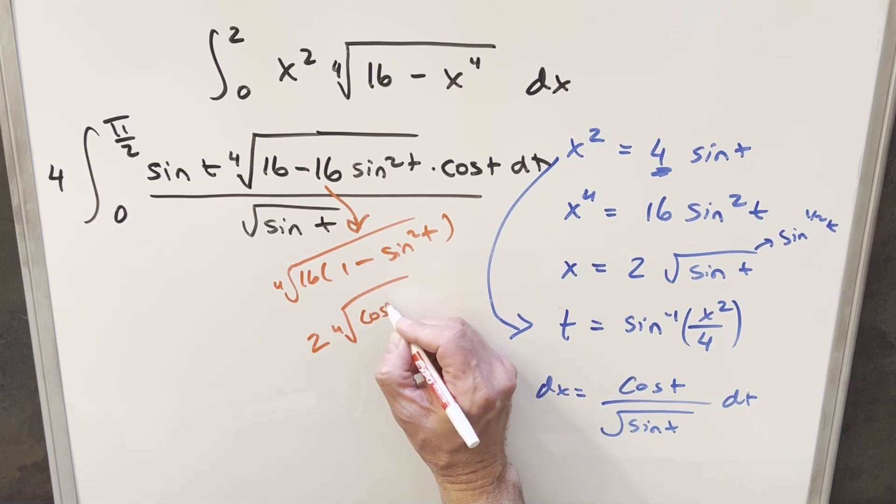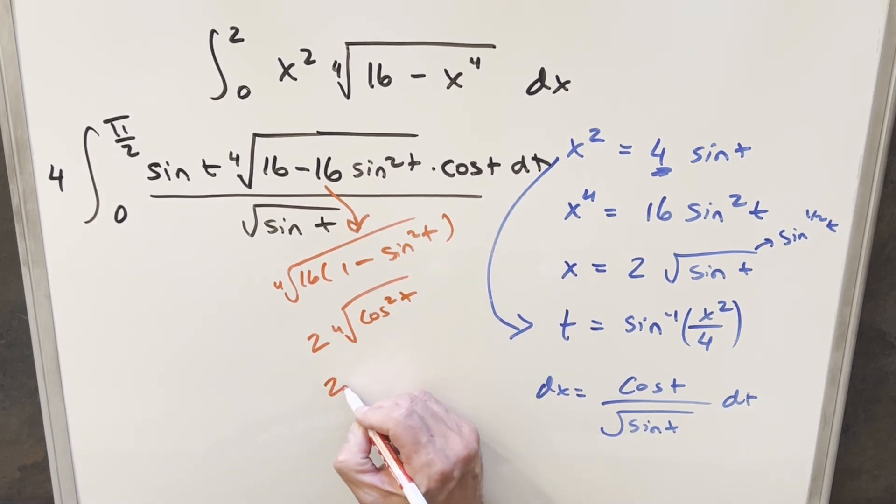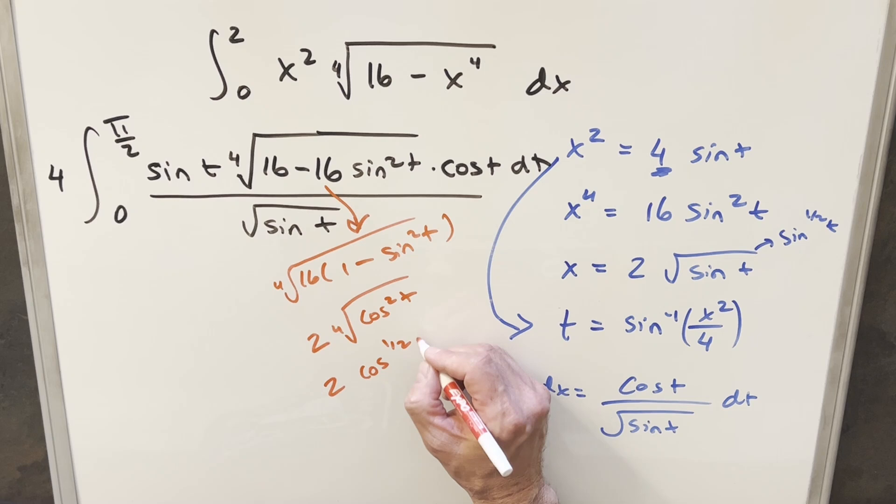So we'll just write this as cosine squared t here. But then rewriting again, cosine squared to like the 1 fourth power by exponent properties, we can write this as cosine to the 1 half t.